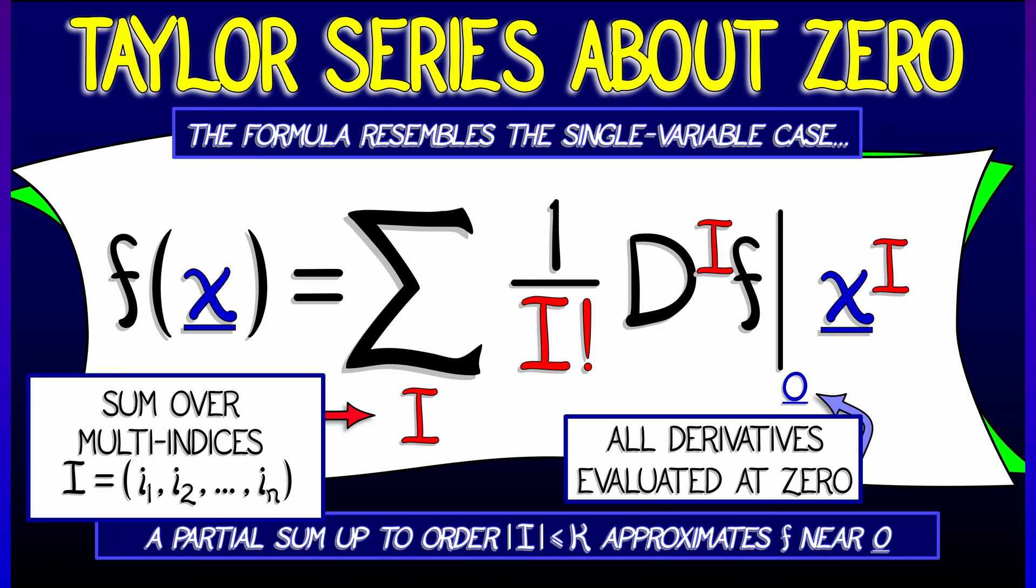That's it. If you want to chop it off after a certain number of terms, maybe just take all multi-indices of order less than or equal to k. Then that is a polynomial and a good approximation to f near zero, where all the inputs are zero.